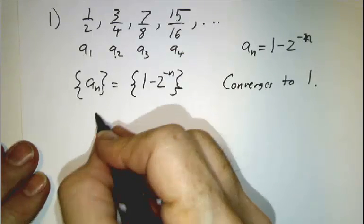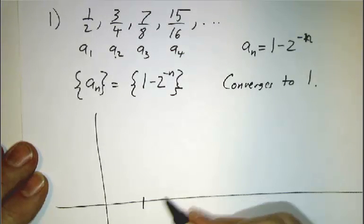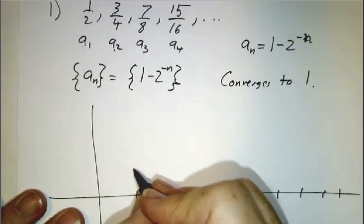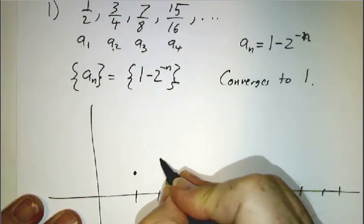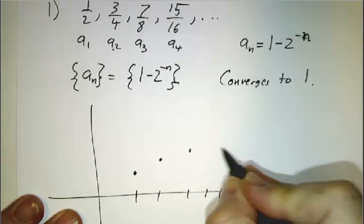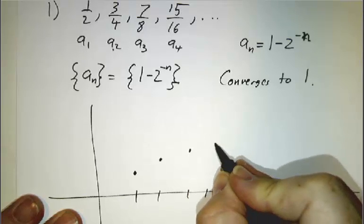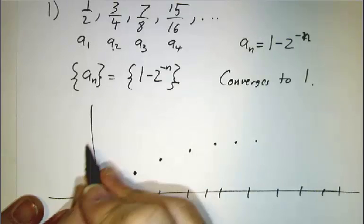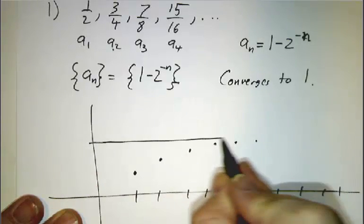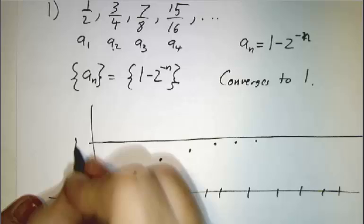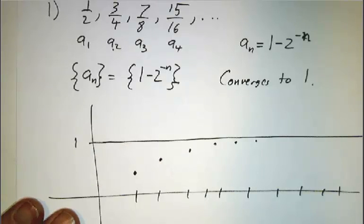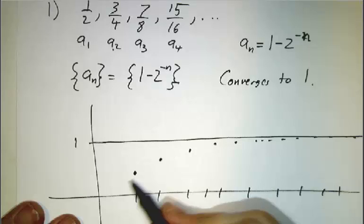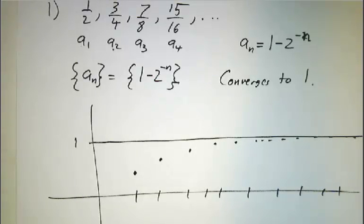We could plot a graph of it. For a sequence, a graph is just a bunch of points. So we get 1 half, then 3 quarters, then 7 eighths, then 15 sixteenths, then 31 32nds, and so on. It gets closer and closer and closer to the value 1. That's what convergence looks like — it converges nicely.